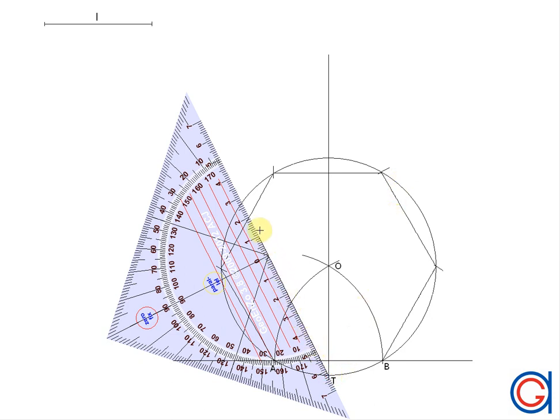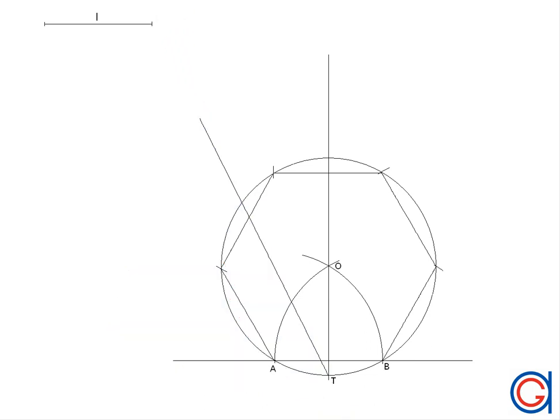Now the next step is to divide the radius OT into six equal parts using Thales theorem. The first step is to draw a line starting from point T on the circle at any angle. Now using our compass which we will set to a certain length, 1 cm or 2 cm, we will proceed to scribe six arcs on this line using the compass. We can also do this using a ruler.